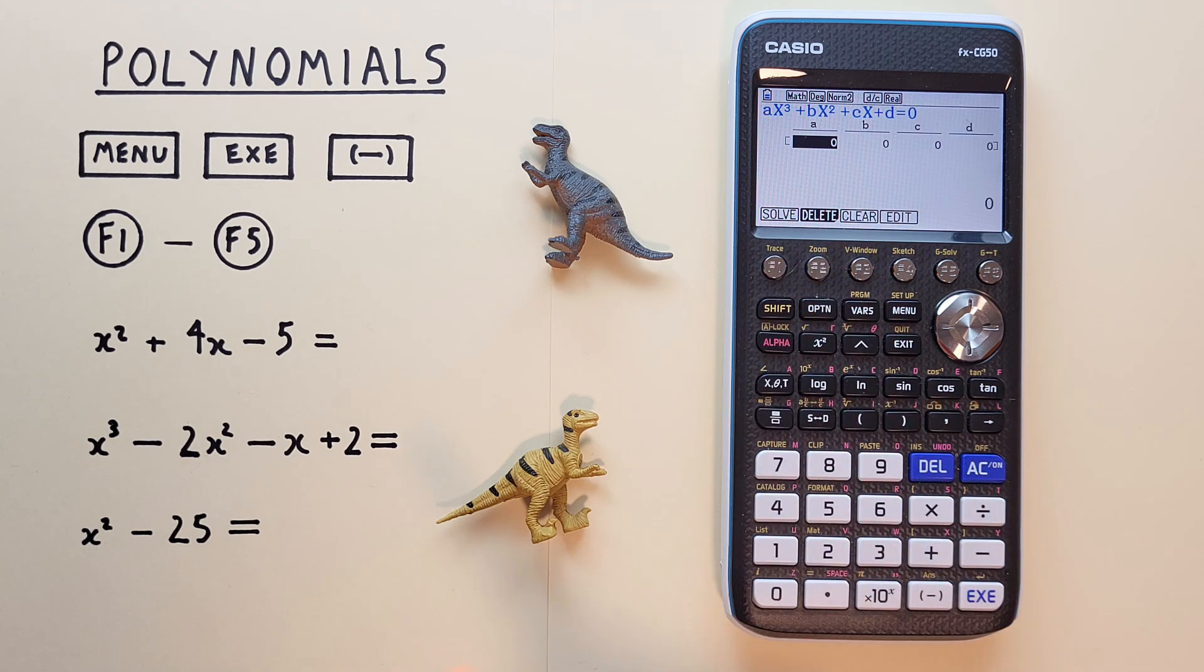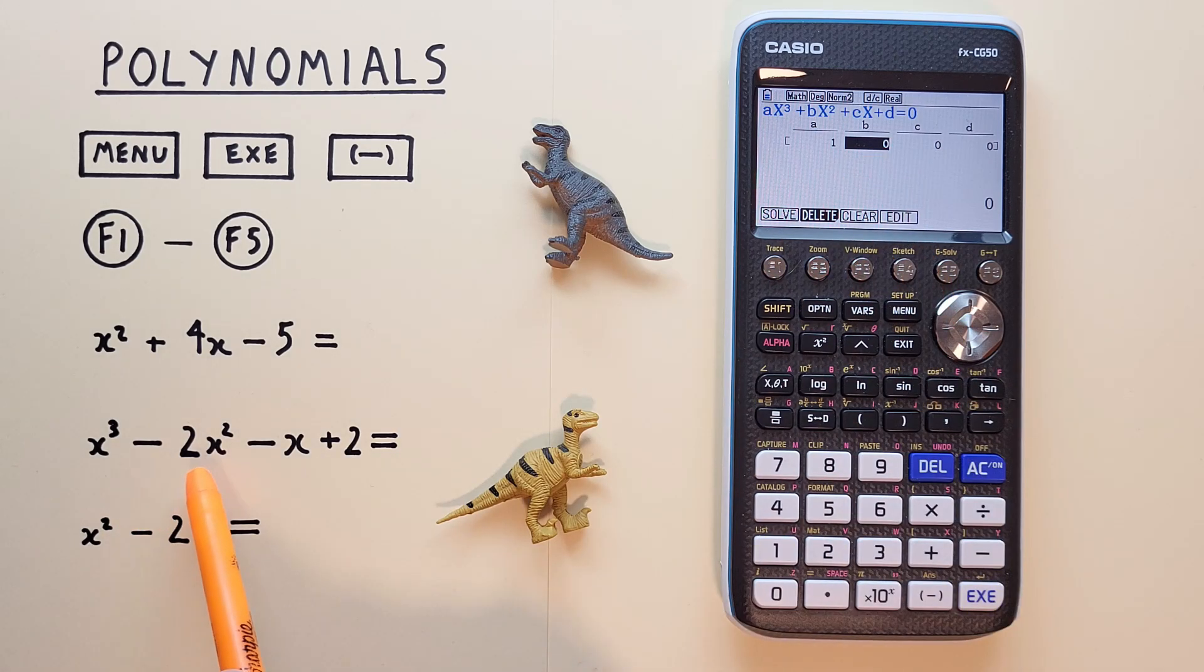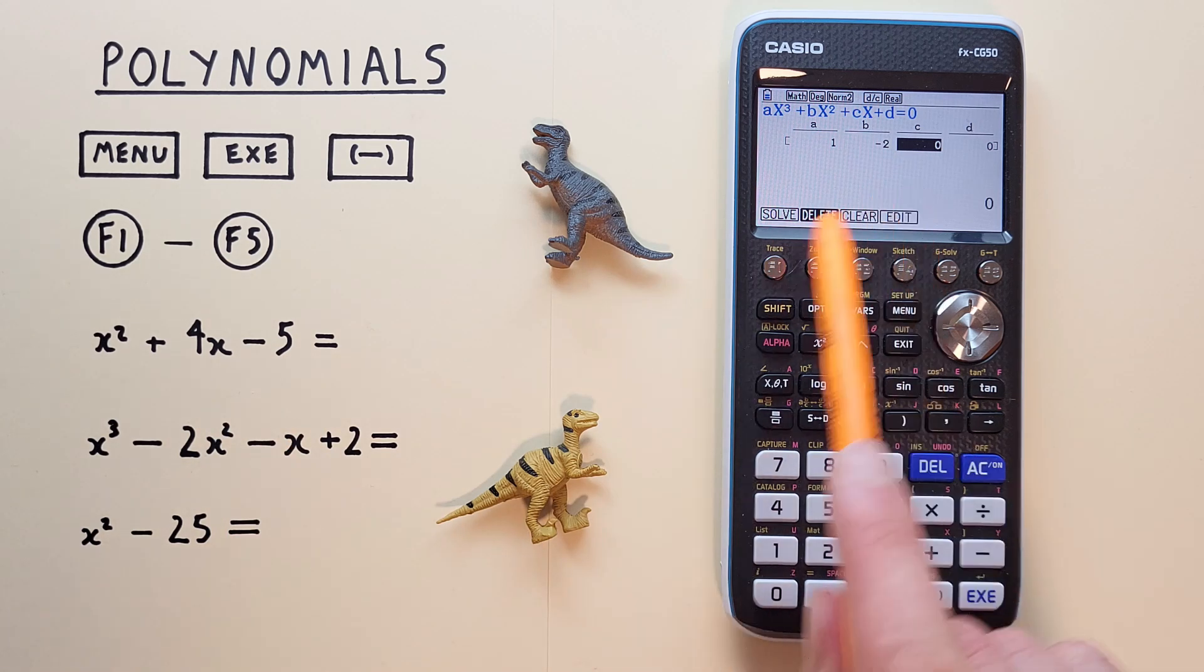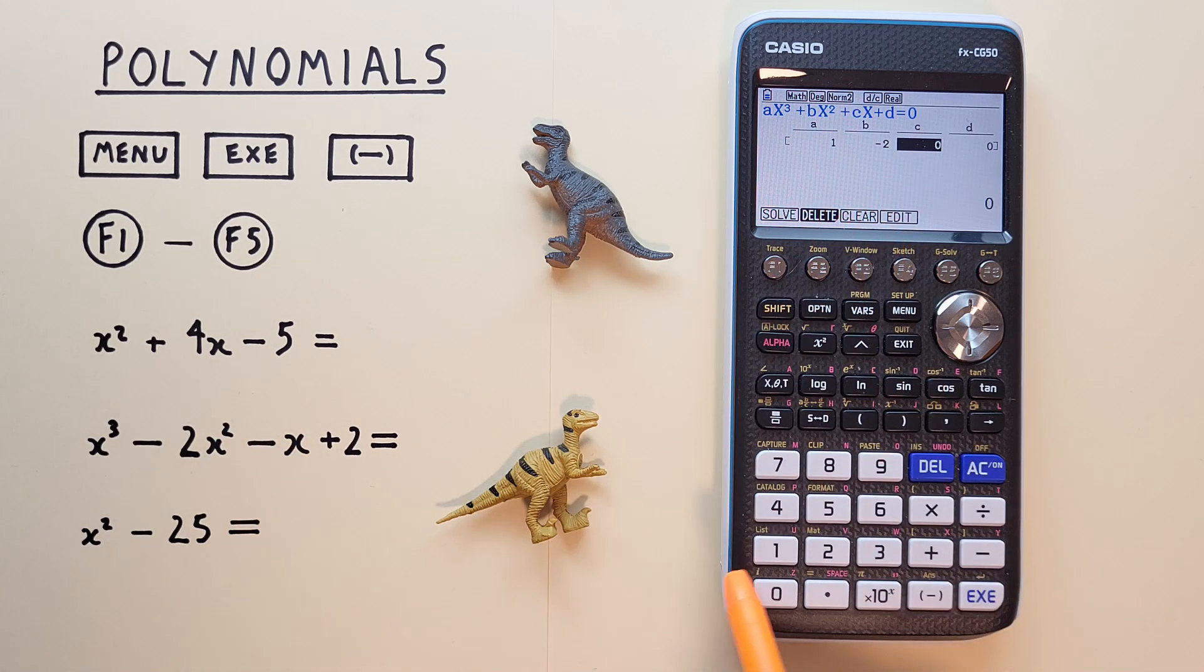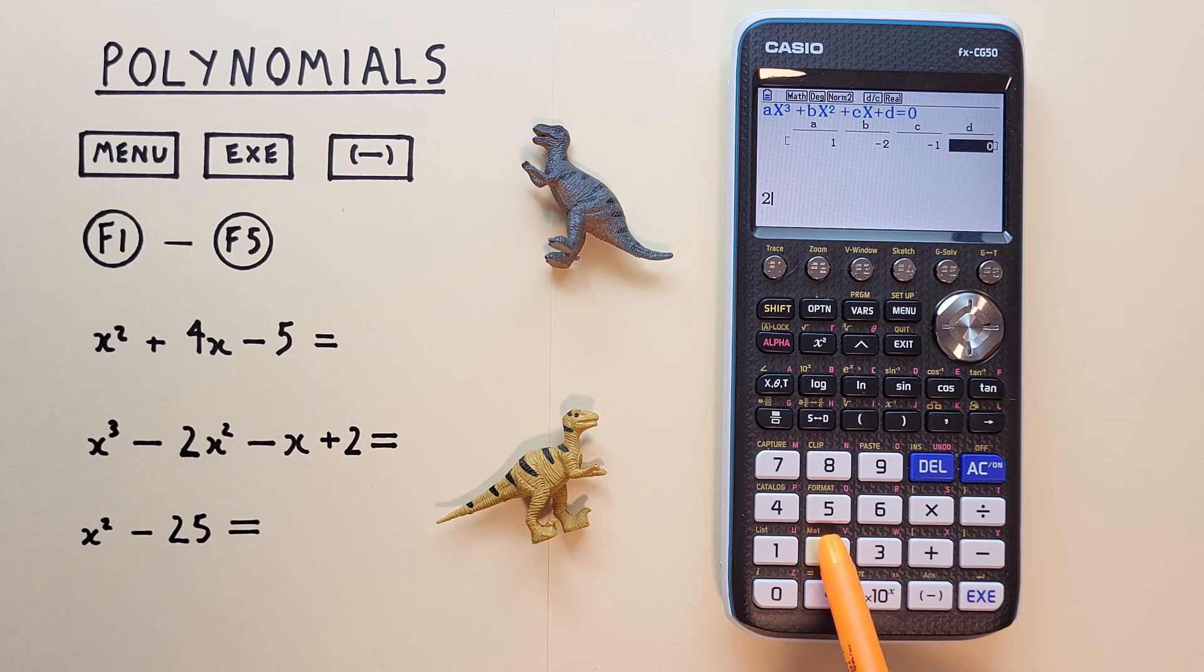Then again, we can enter our numbers. So x to the power of 3 is 1. For b, we have minus 2x. So we go negative 2. For c, we have minus x. So we just enter negative 1. And d, we have 2. So we enter 2 there. And hit solve.